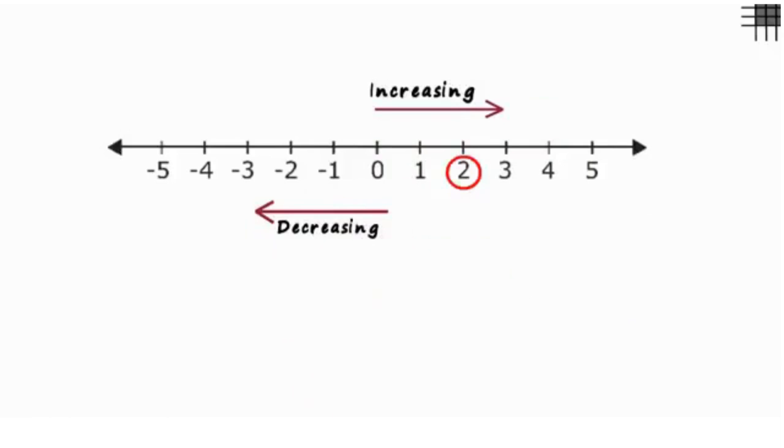Consider any random number. Say 2. Now choose any number to its right. Say 5. 5 is greater than 2. Now choose another number. Say 4. Even 4 is greater than 2.